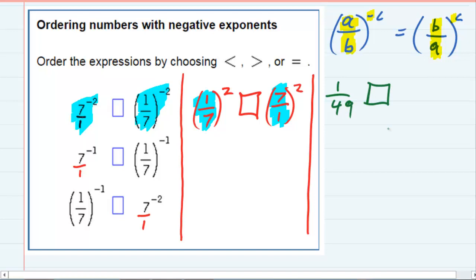And on the other side, it's going to be 7 squared, 49, over 1 squared, which is 1. So I've actually ended up with 1 over 49 on the left and 49 over 1 on the right. 49 is greater than 1 over 49, so I'm going to put my sign in there.